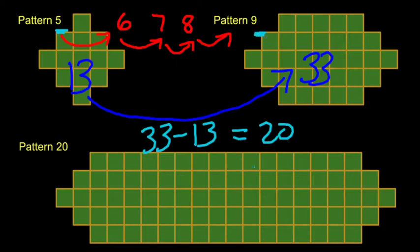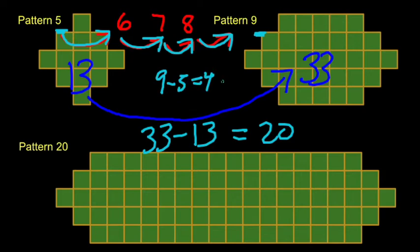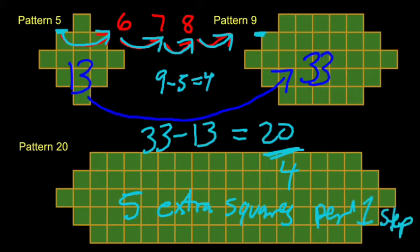I want to split this twenty into how many steps am I taking to get from pattern five to pattern nine. So from five to six, that's one step. Six to seven, that's two. Seven to eight, that's three. Eight to nine, that's four steps. And again, I could just find that by a subtraction. Nine minus five equals four. If I'm making four steps to get from five to nine, and I've got twenty extra squares, how many extra squares do I get for just one step? That's going to be twenty divided by four, or five extra squares per one step. That's what I'm counting by, fives.